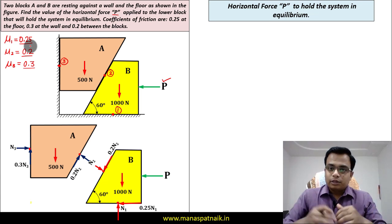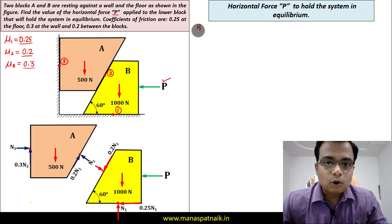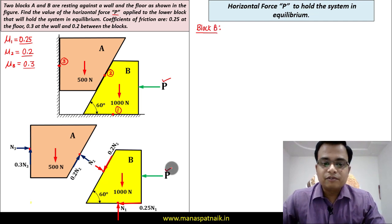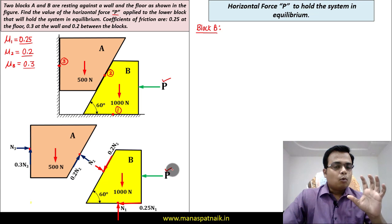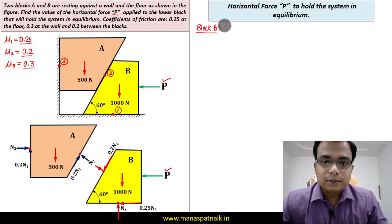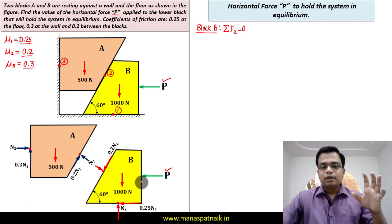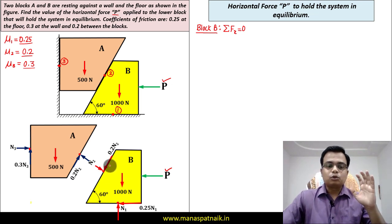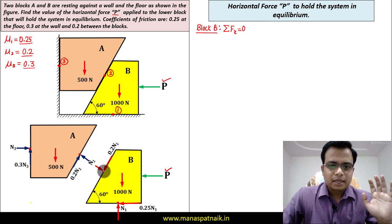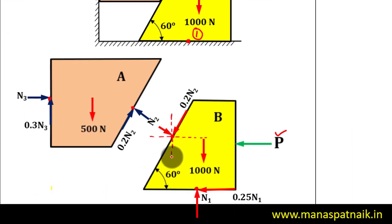We'll first analyze block B because I want an equation in which P is a variable, and that will reveal the unknowns N1 and N2. Applying summation of forces along the x-direction equal to zero, we need to resolve the inclined forces into x and y components. The wedge angle is 60 degrees — since these two lines are parallel and this is a transversal, if one angle is 60°, the alternate angle is also 60°.